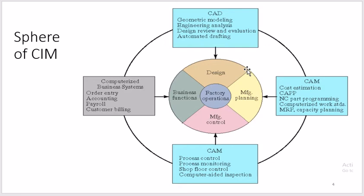This is called the sphere of CIM — Computer Integrated Manufacturing. It has four different factory operations: designing, manufacturing planning, manufacturing control, and business function. Designing covers CAD software; manufacturing planning covers which machines like CNC and DNC are to be used; manufacturing control covers process control, product control, and inspection — all controlled by computer.